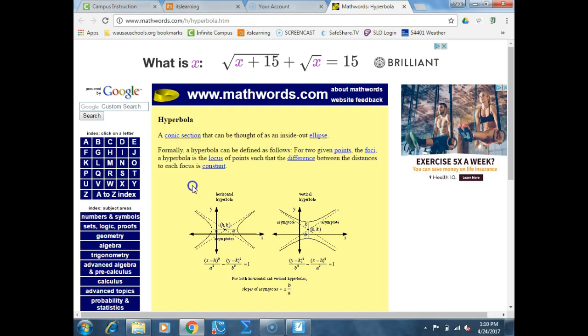Remember, a parabola is always increasing at a bigger rate, so that U almost becomes vertical, whereas a hyperbola just goes out towards an asymptote. Technically, a hyperbola is defined as the locus of all points such that the difference between the distances to each focus is constant. Before, in an ellipse, it was the sum of the distances to each focus was a constant. Now it's the difference is a constant.